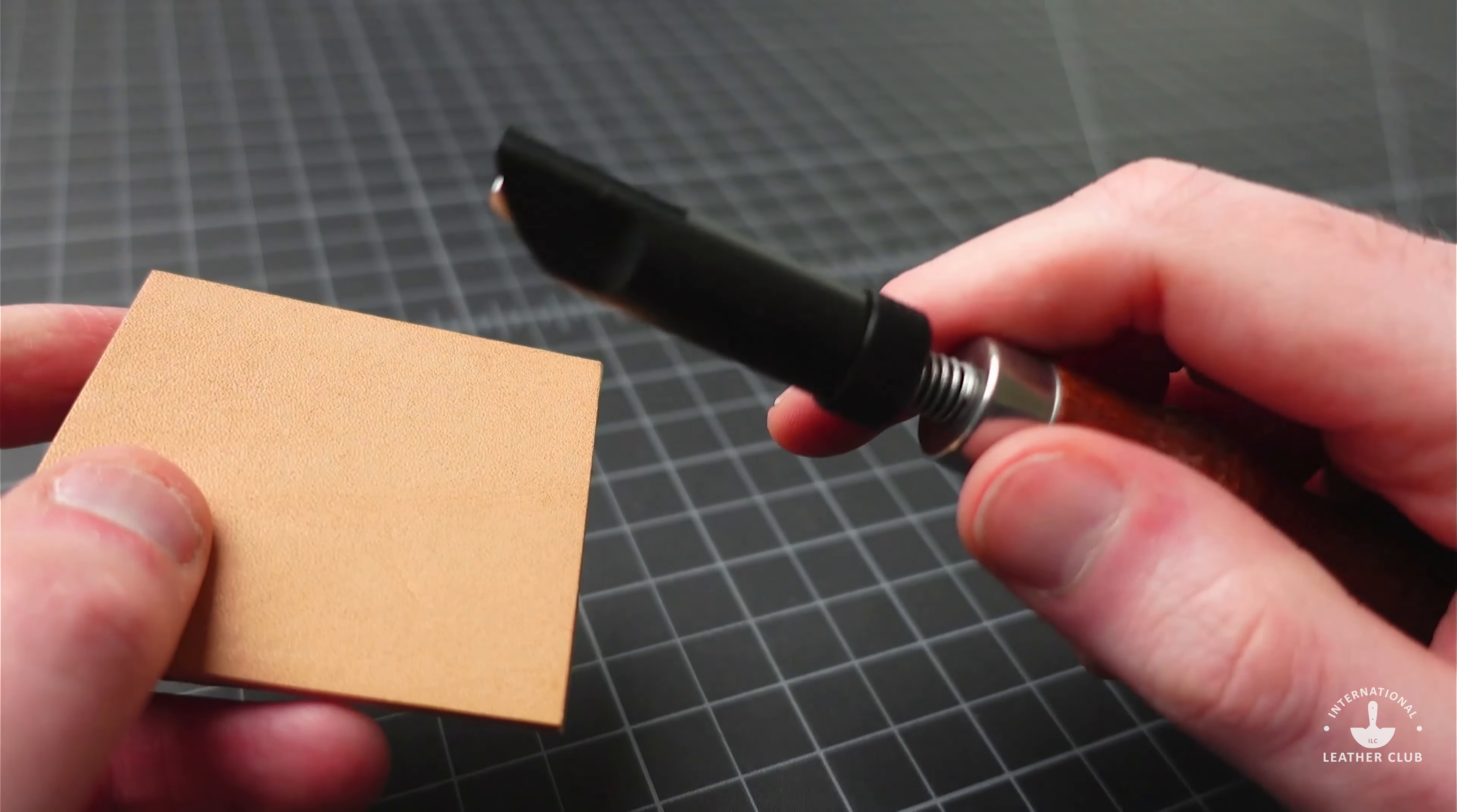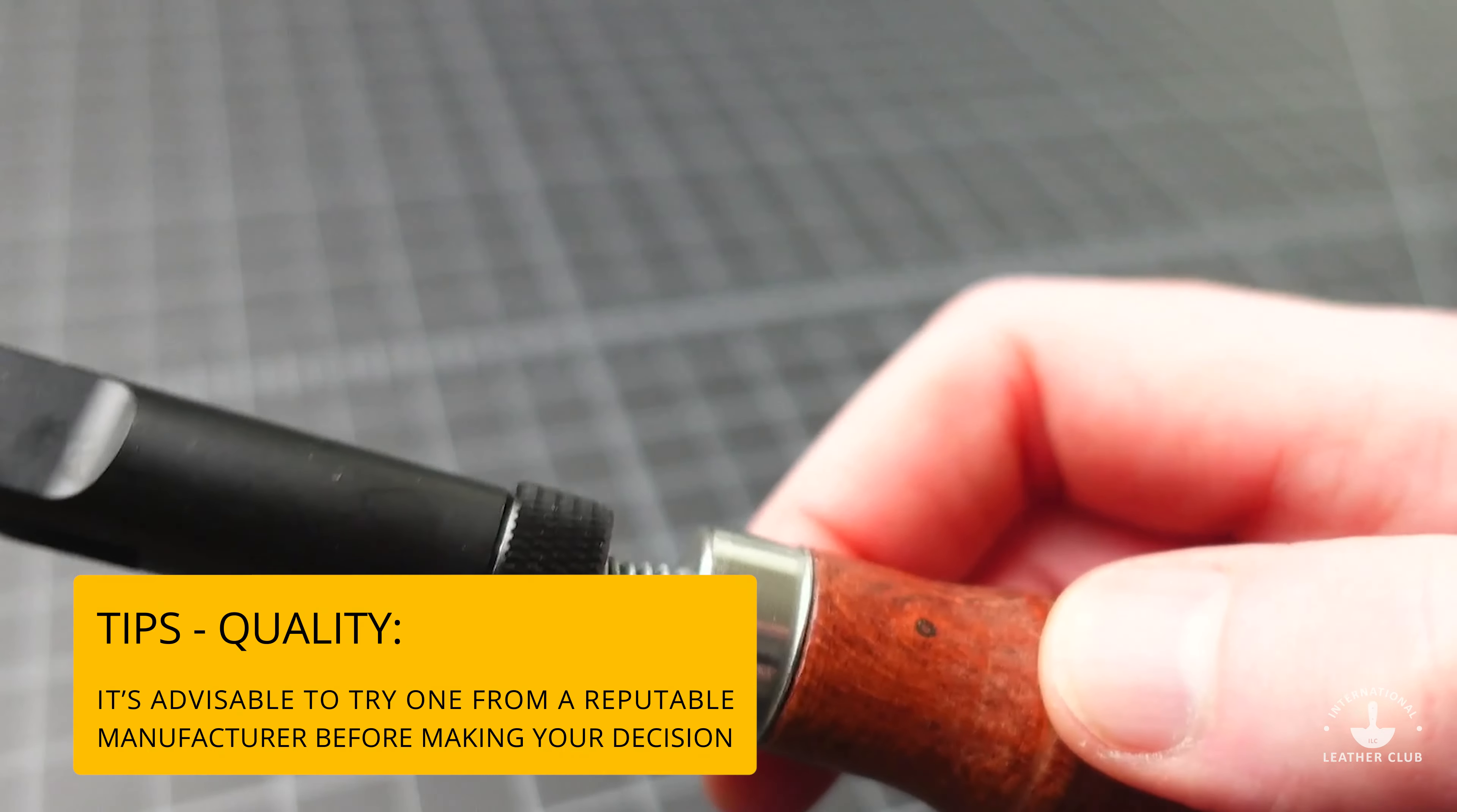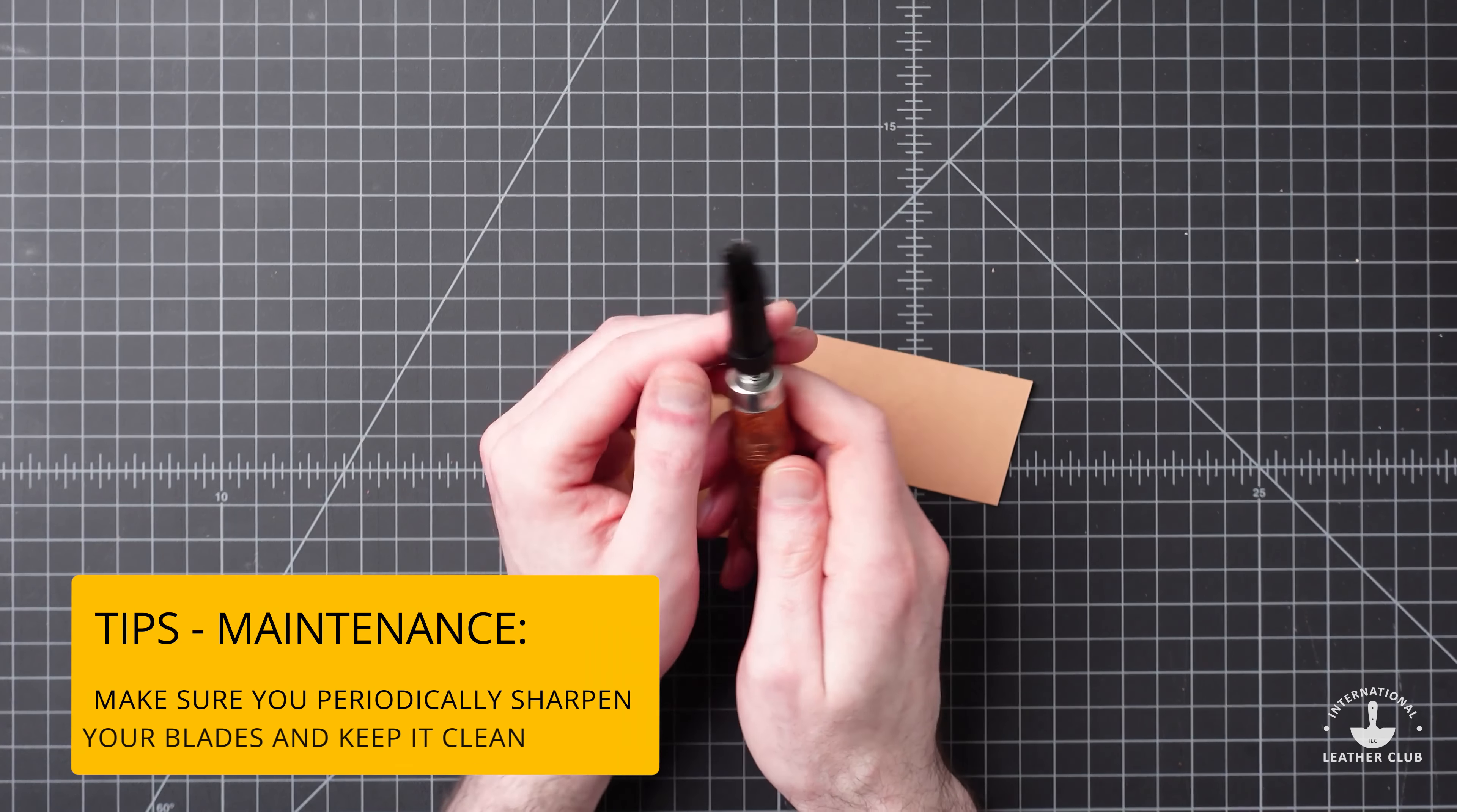So when you're looking to get one, what to keep in mind? First and foremost is quality—you want a sharp blade from a reputable manufacturer, and that way you know your tool is going to be reliable. The next thing would be maintenance: make sure you periodically sharpen those blades and keep it in overall good, clean working order.